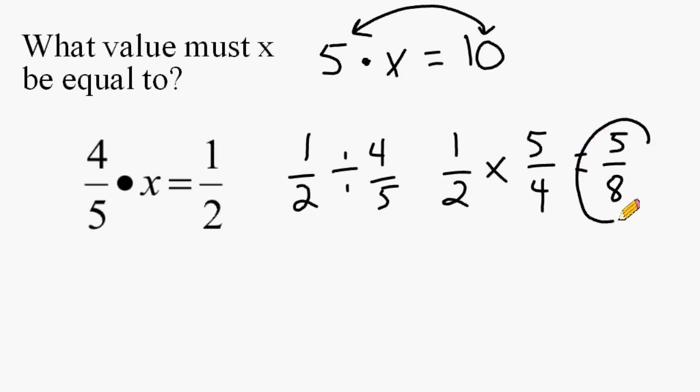So we would say that x is equivalent to 5 eighths. But just to make sure, let's substitute 5 eighths in for x and multiply it by 4 fifths just to see if it does produce 1 half.